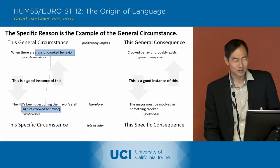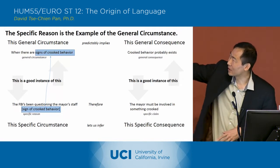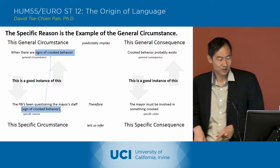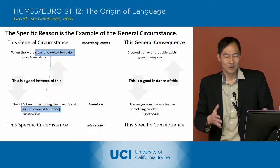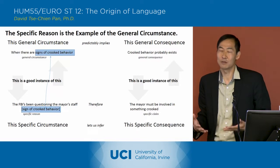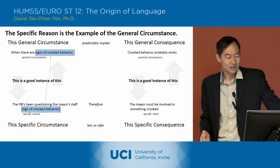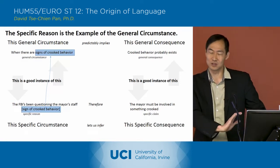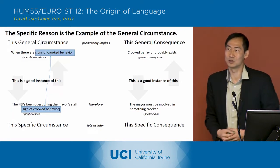The first piece we notice in this diagram is that 'signs of crooked behavior' shows up in two places. They have it down here under specific reasons. The basic argument being analyzed is that the FBI's been questioning the mayor's staff, therefore the mayor must be involved in something crooked. So the FBI questioning the mayor's staff is the evidence side, and the mayor must be involved in something crooked is the claim side.